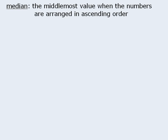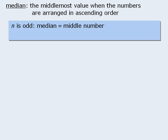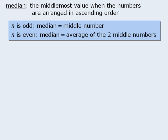Another way to describe a set of numbers is to use the median. The median is defined as the middlemost value of a set when the numbers in that set are arranged in ascending order. When determining the median, we need to consider two cases. When n, the number of values, is odd, then the median is the middle value once the numbers are arranged in ascending order. When there is an even number of values, the median is the average of the two middle values.